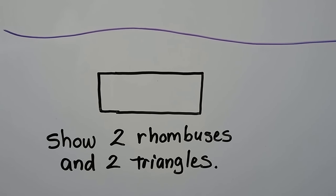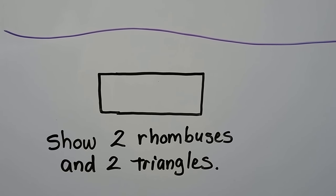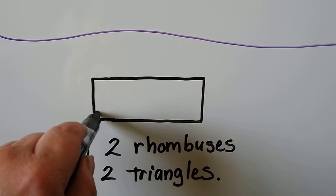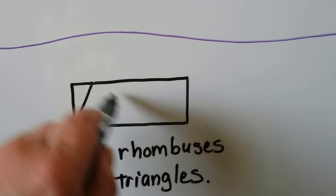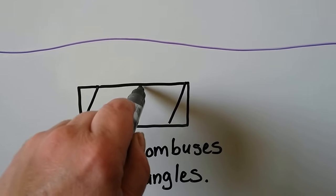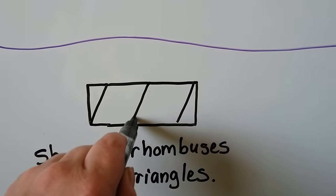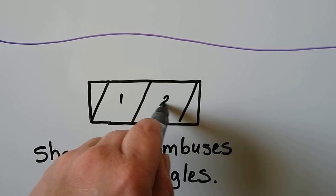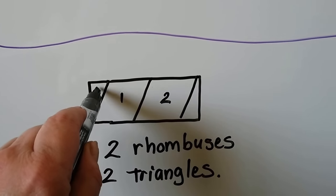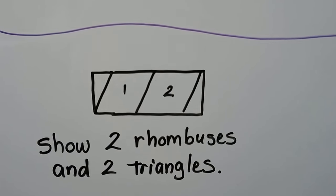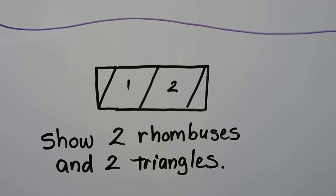Can we show two rhombuses and two triangles? If we go from here on an angle and from here on an angle, we can go like that. Here's one rhombus, two rhombuses, and one, two triangles. See that?